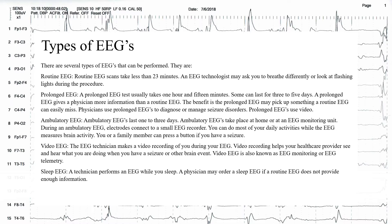Physicians use prolonged EEGs to diagnose or manage seizure disorders. Prolonged EEGs use video. Ambulatory EEGs last 1 to 3 days and take place at home or at an EEG monitoring unit. During an ambulatory EEG, electrodes connect to a small EEG recorder. You can do most of your daily activities while the EEG measures brain activity, and you or a family member can press a button if you have a seizure.